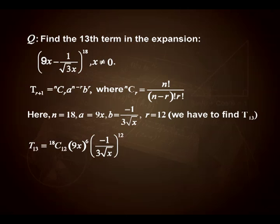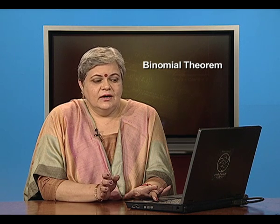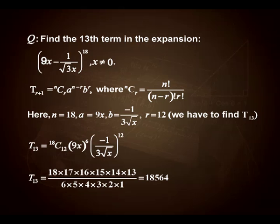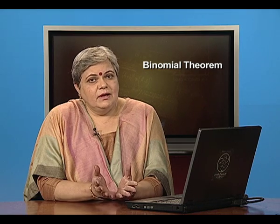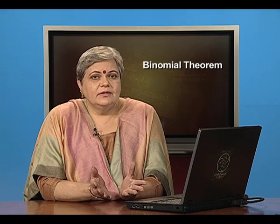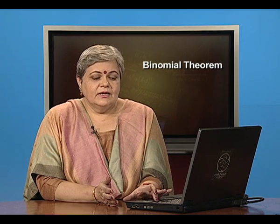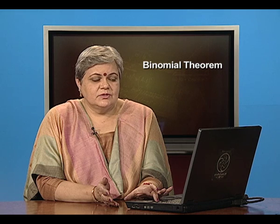Now simplify each factor. There is an x^6 in the numerator and x^6 in the denominator, so the powers of x cancel completely. This is a special term that does not contain x — it is only the number 18564. Any term in which the power of x is 0 is known as the absolute term or term independent of x. In this case it happens to be the 13th term.